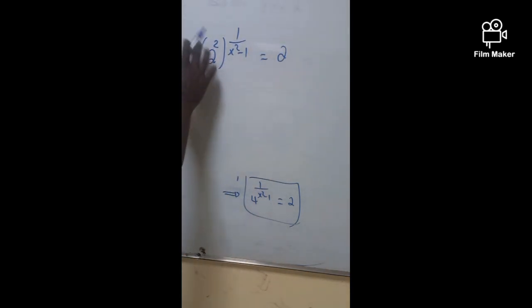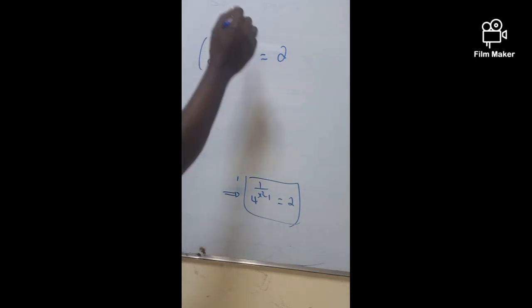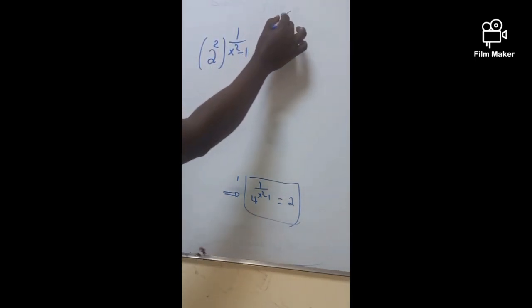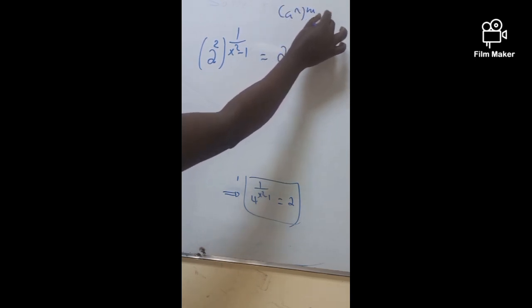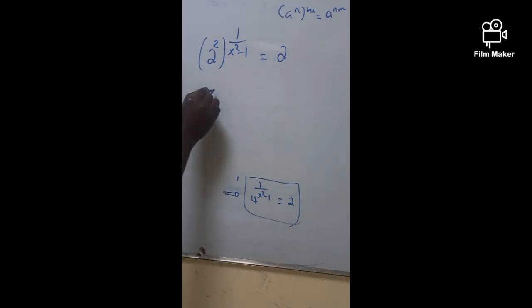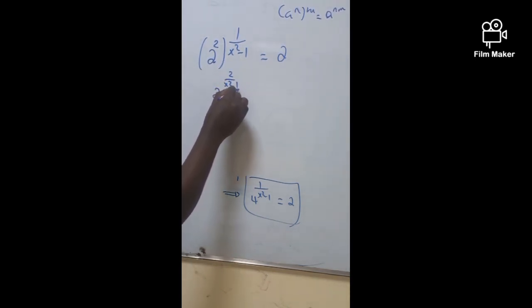So it is given by simply, now we can find the product. Because with the law of exponents, you know that, l raised n, the whole m mean, that is going to be l raised n times m. So l is given by 2 raised 2 over x square minus 1. That's going to be 2 raised 1.